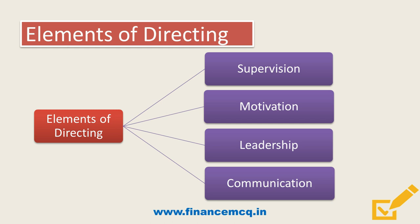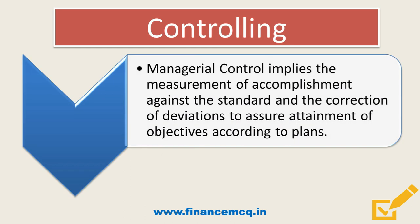From here we will move to the next topic, which is controlling. The definition of controlling states: managerial control implies the measurement of accomplishment against a standard and correction of deviation to assure attainment of objective according to the plans. In simple words, in order to seek planned results from subordinates, a manager needs to exercise effective control over the activities of his subordinates. Controlling means ensuring that activities in an organization are performed as per the plan.